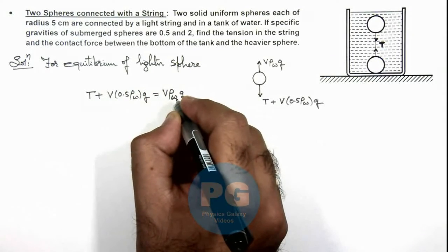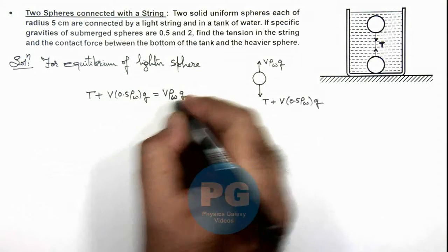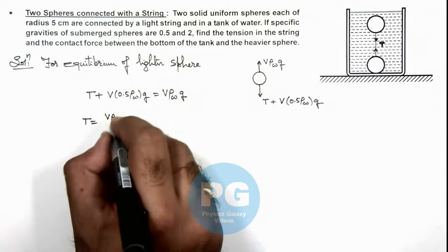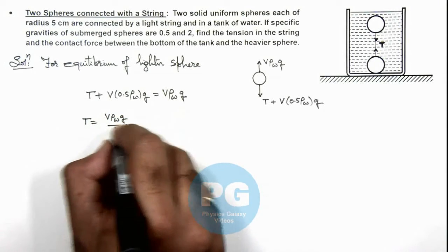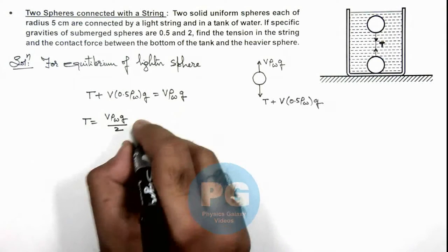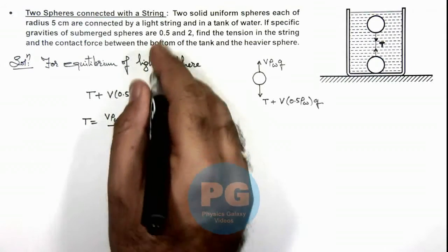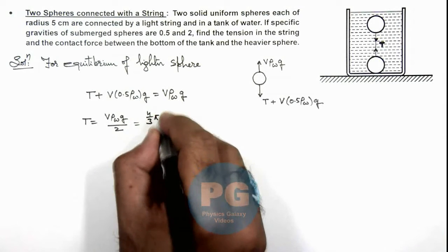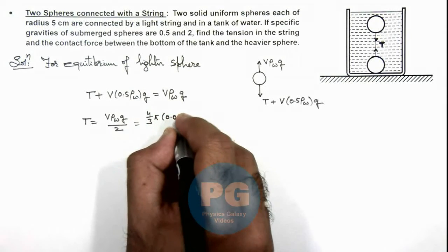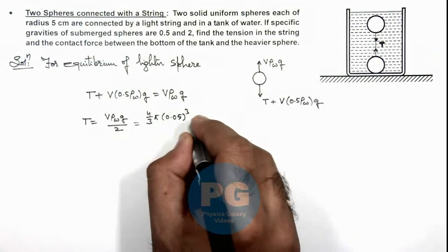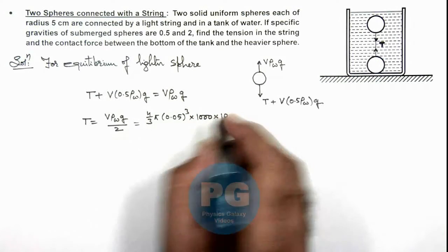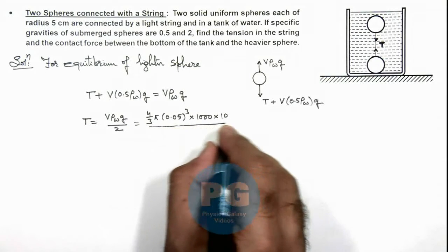Now, in this situation, if we calculate the value of tension we are getting the value of tension is equal to V ρ water g by 2. And in this situation we can get the volume by using the radius as 4/3 π × 0.05³ multiplied by water density to be taken as thousand, g as 10, whole divided by 2.